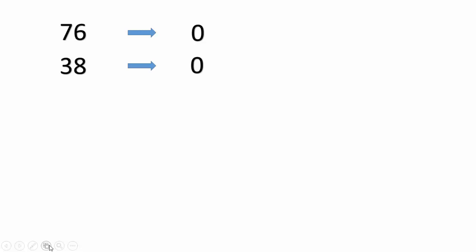38 is again even, so we write down zero and divide it by 2 to get 19. As 19 is an odd number, we subtract 1 from it to get 18, divide it by 2 and get 9. As 9 is again an odd number, we write down 1, subtract 1 from 9 which is 8, and divide by 2 to yield 4.